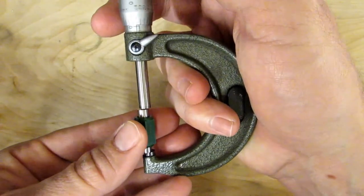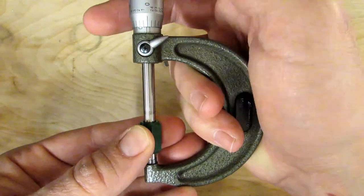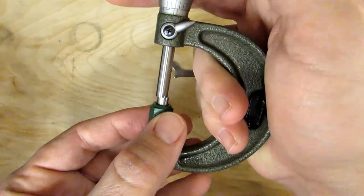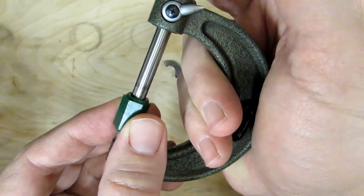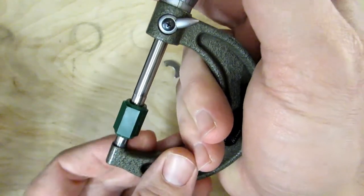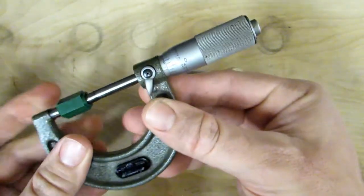And then once they're clean, go ahead and close it just like normal. Anytime you're measuring, you want to give it a little wiggle to make sure that the part is well seated on the micrometer. And then again, I lock my zero.